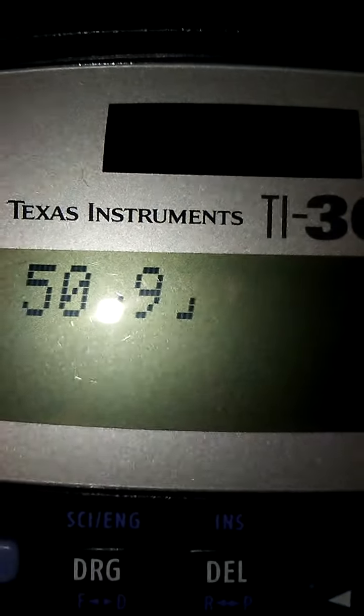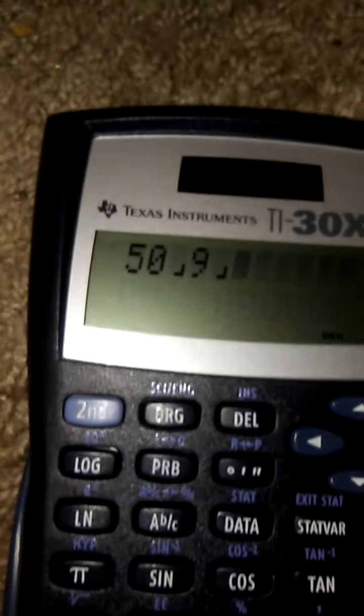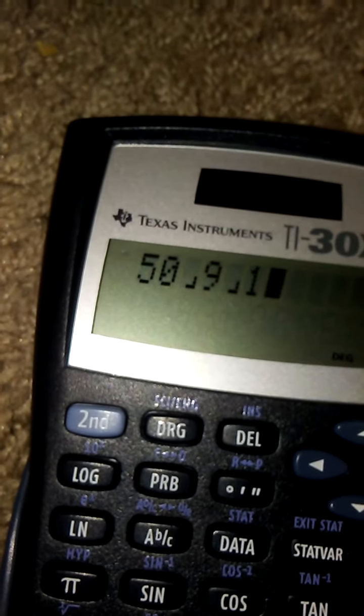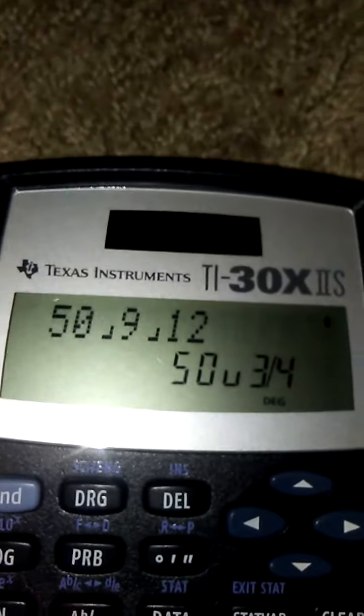You guys can see 50 over 9. We're going to enter in 1, 2. So, 50 and 9 twelfths. You simplify that, you get 50 and 3 fourths.